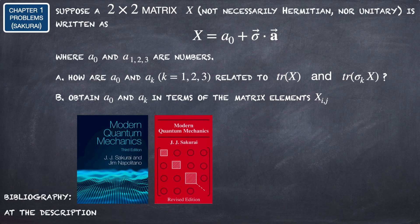Suppose a 2x2 matrix X, not necessarily Hermitian nor unitary, is written as A0 plus sigma dot A, where A0, A1, A2, and A3 are numbers.